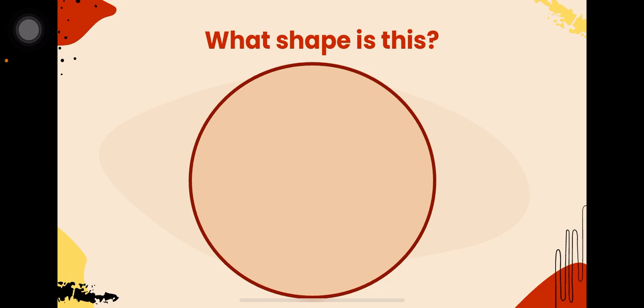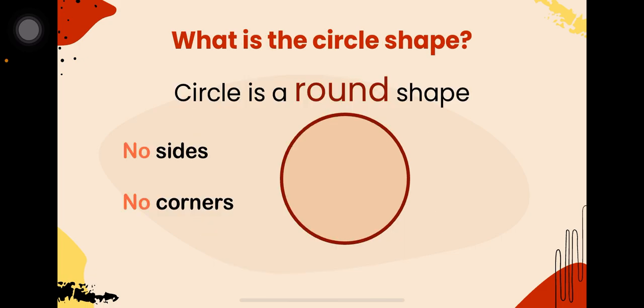So, today we'll learn about circle shape. A circle is a round shape. It has no sides and no corners. It's a very round shape. Okay?